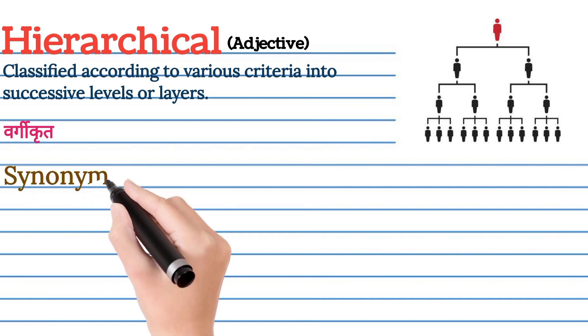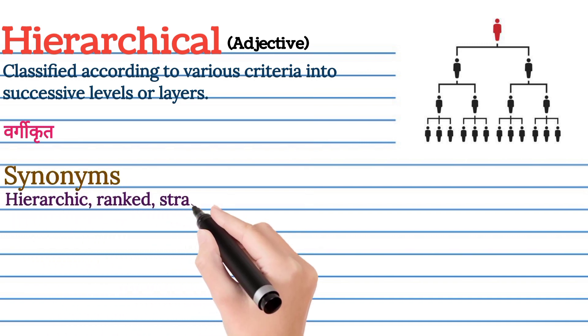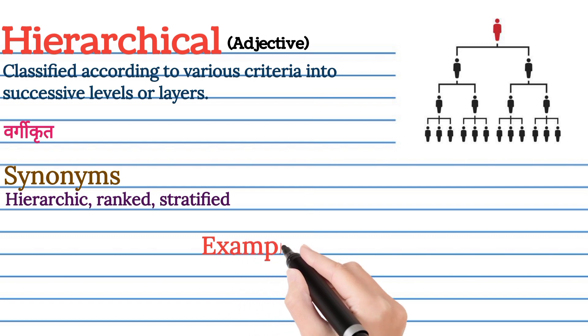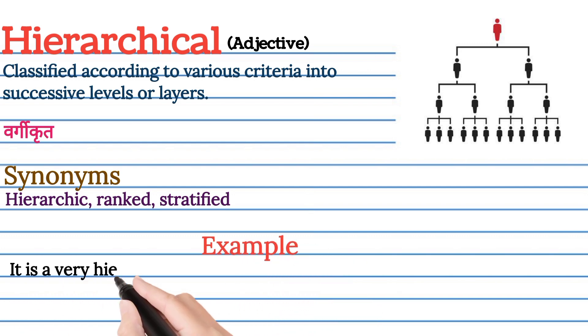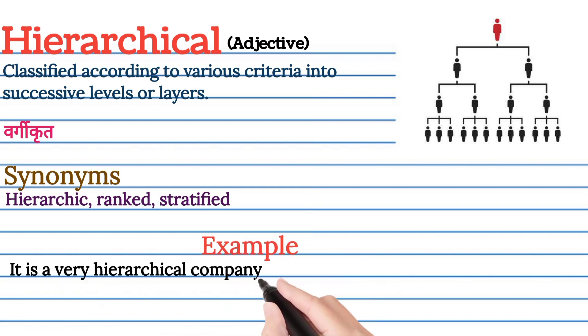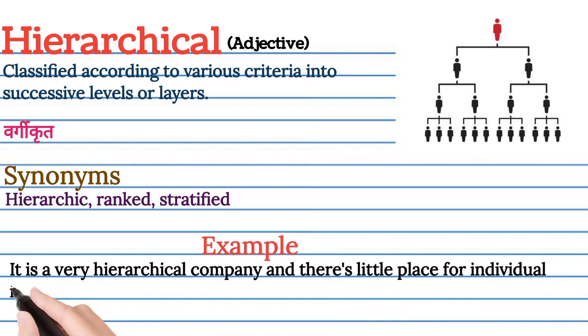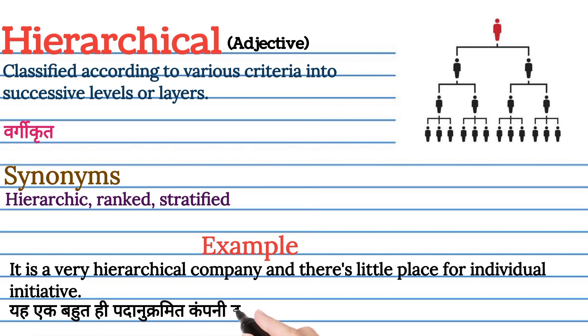Hierarchical ke synonyms hain: Hierarchic, ranked, stratified. Hierarchical ko lekar examples se sentence mein achha se samaj lete hai. It is a very hierarchical company and there's little place for individual initiative.